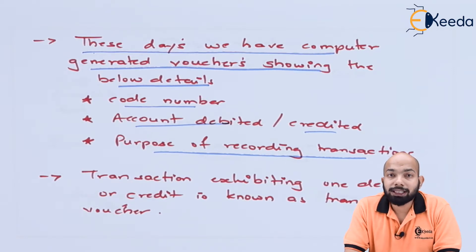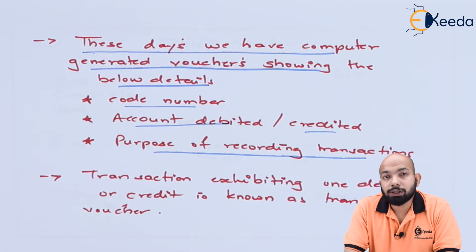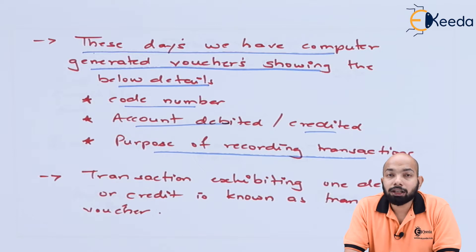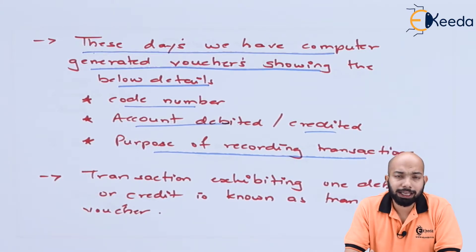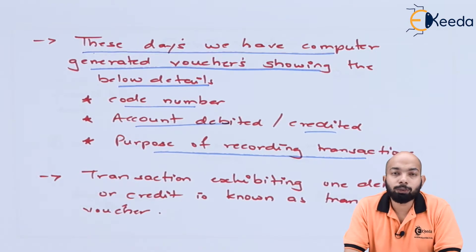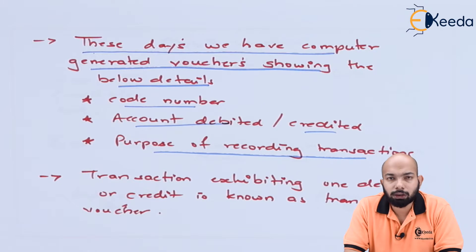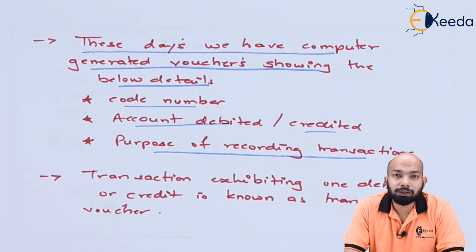When we talk about these kinds of vouchers, they have three things in common: the code number — that is, the unique invoice number; the name of the debit or credit account and the amount; and the narration — a brief explanation about the transaction or product details. These three elements are part of any voucher, depending on the nature of the business and transaction.